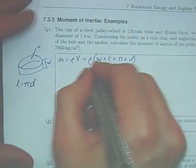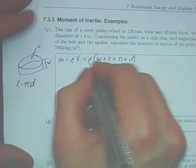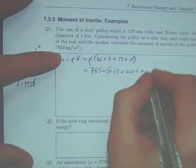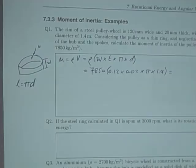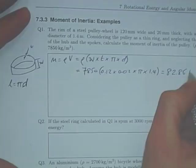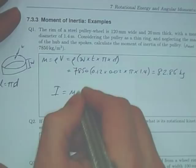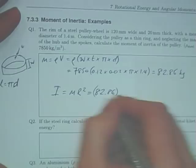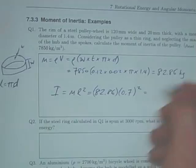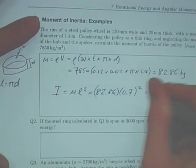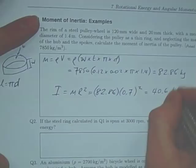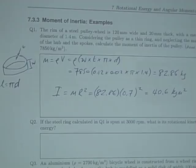Working through: mass = 7850 × 0.12 × 0.02 × π × 1.4 = 82.86 kg. The moment of inertia for a thin ring is MR², so I = 82.86 × 0.7² (using radius = half the diameter = 0.7 m), which comes out to 40.6 kg·m².